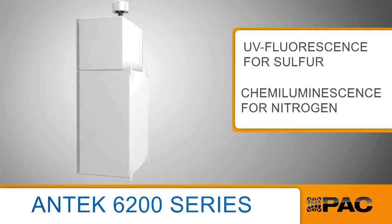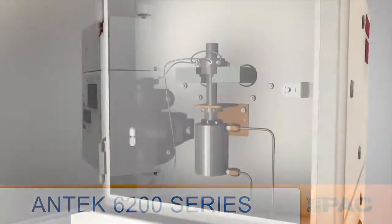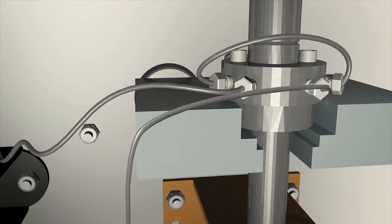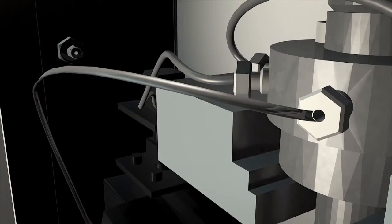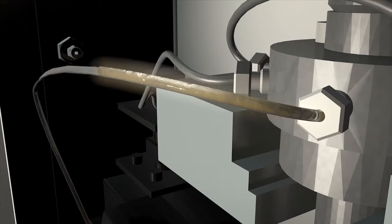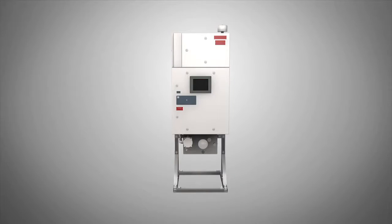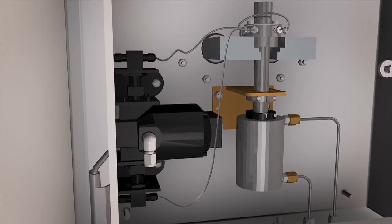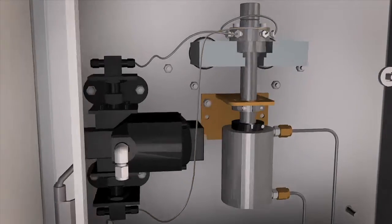The first step is the introduction of the sample. The 6200 series utilizes a direct injection system which means the sample is completely combusted during every measurement cycle. The injection valve directly delivers a microliter of sample to the furnace for analysis.